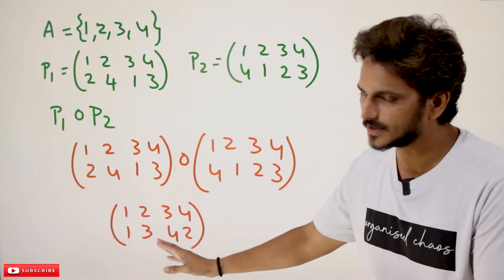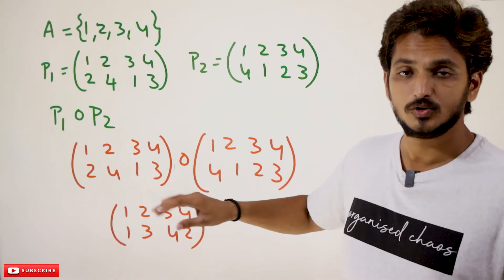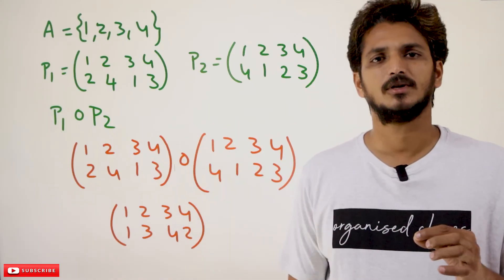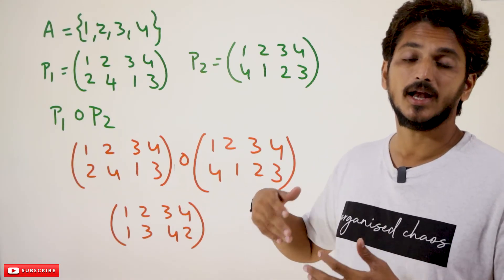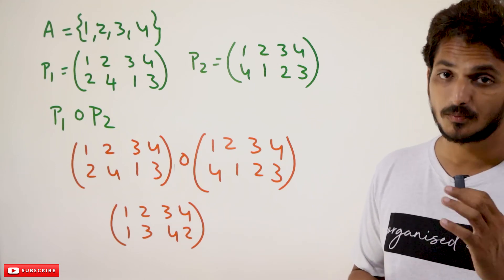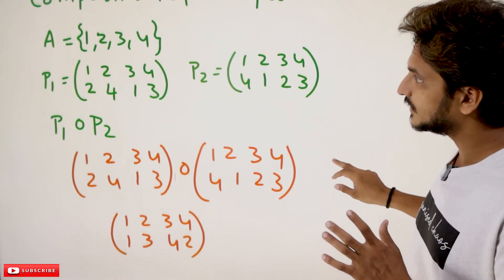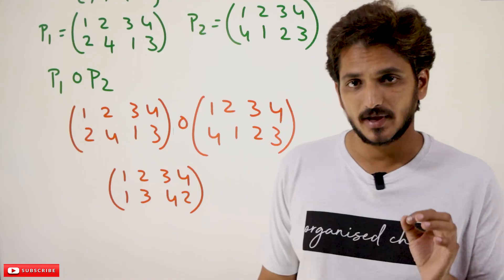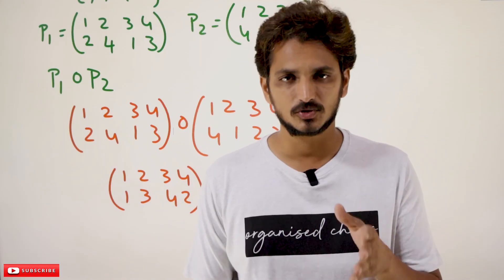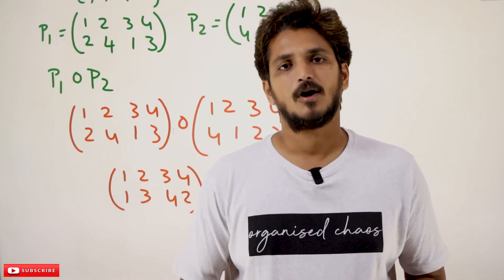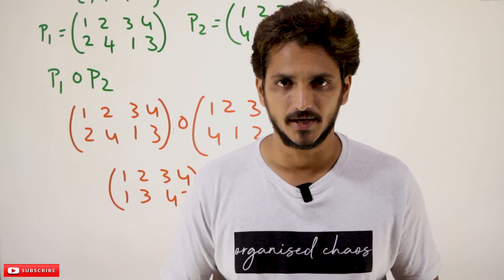So we got the new permutation. The point you need to understand here is that a composition of 2 permutations gives you a new permutation. Hope you understand the basics about permutation functions. If you have any questions regarding the concept, please post your questions in the comment section below. Thanks for watching. If you have not subscribed to our channel, please subscribe and press the bell icon for the latest updates.